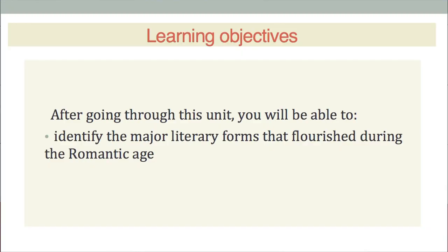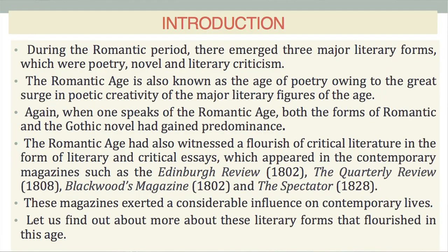Learning Objectives. After going through this unit, the learner will be able to identify the major literary forms that flourished during the Romantic Age. During the Romantic period, there emerged three major literary forms, which were poetry, novel, and literary criticism.